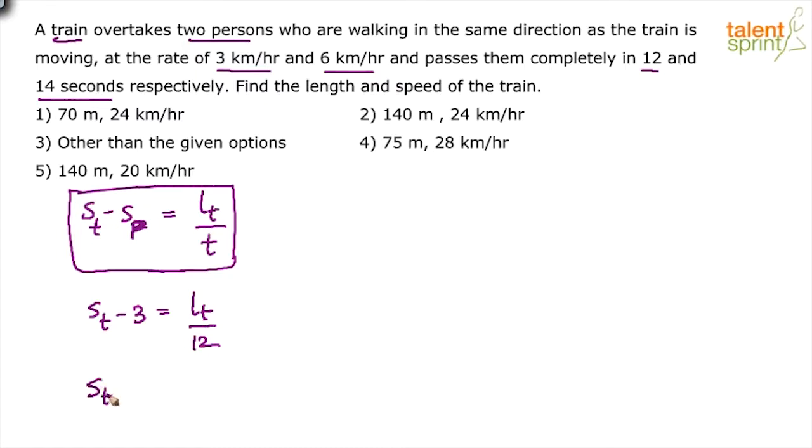And the second equation says speed of the train minus, the speed of the second person is 6 km per hour. Length of the train is LT, time taken is 14 seconds.